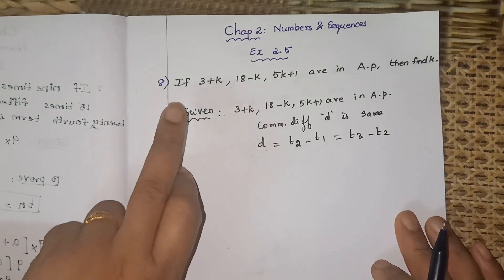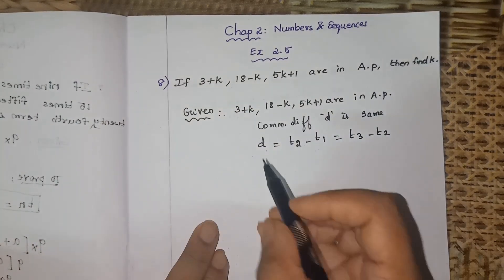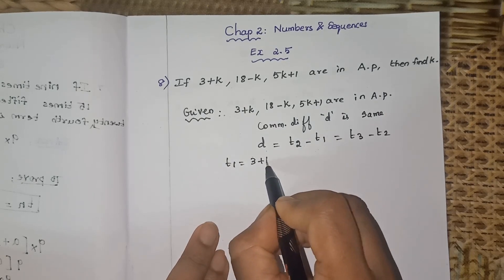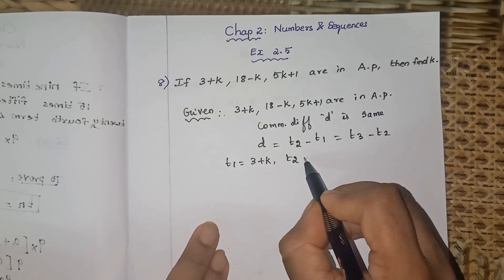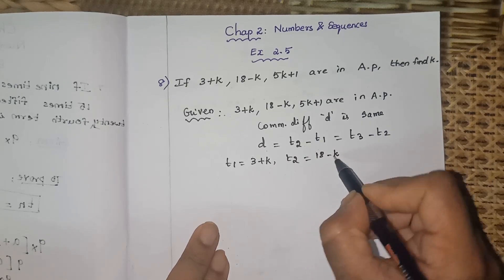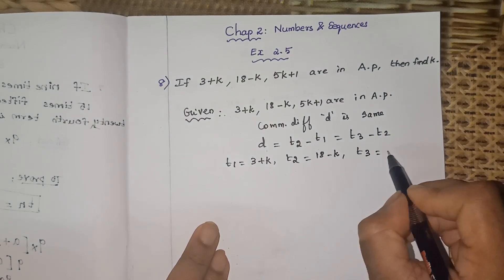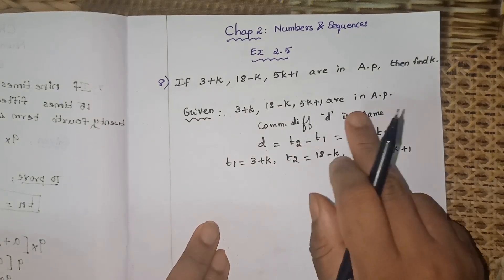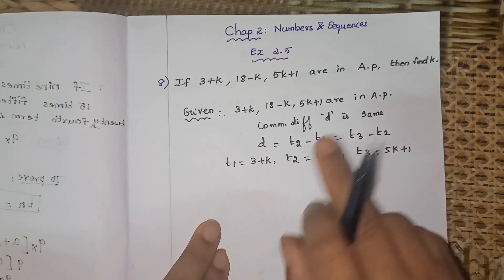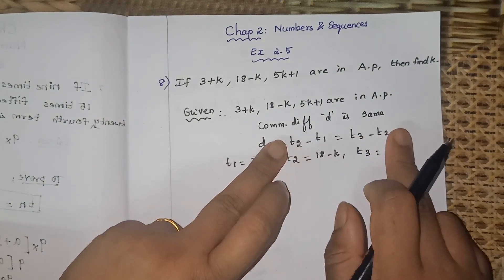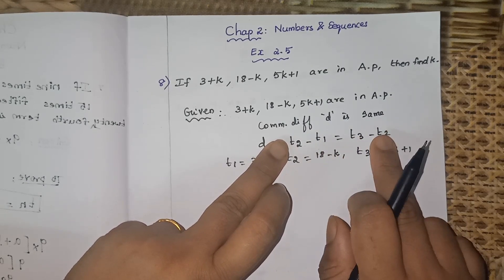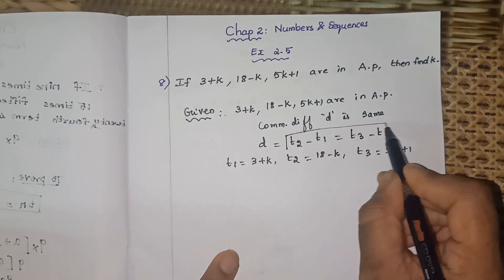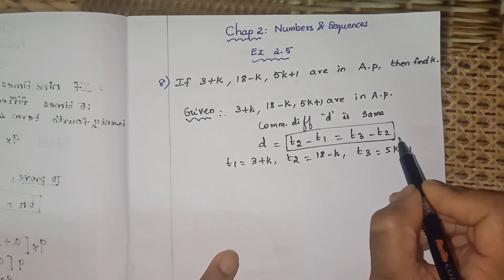We have three terms: T1, T2, T3. So T1 is (3+k), T2 is (18-k), and T3 is (5k+1). Since they are in AP, we can equate the common differences. Common difference is the same, so we set t2 minus t1 equal to t3 minus t2.